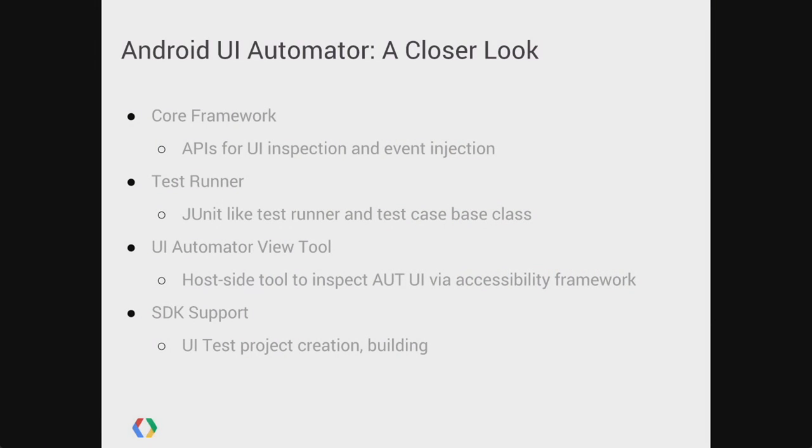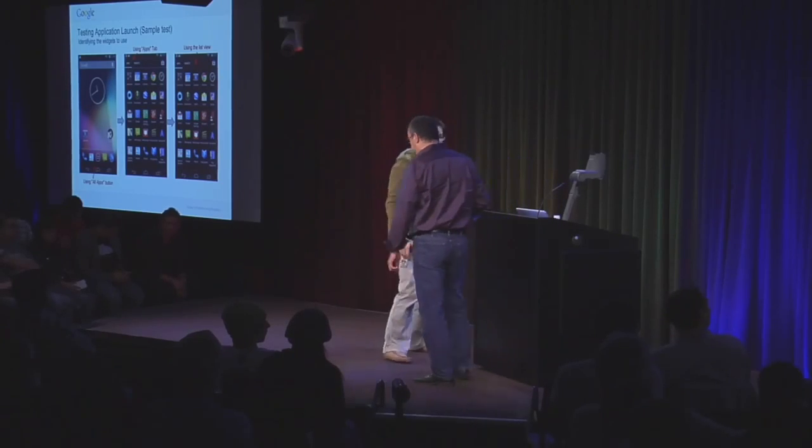As a package presented to the end user, we provide: first, the core framework as outlined; second, a test runner that works in a JUnit3 style; third, a UI Automator Viewer tool — a host-side tool to let you inspect the application under test's UI so you can decide which widgets to look up and test against; and fourth, SDK support with an Ant-based build and scripts to create an empty UI test project, build the test into a JAR file, push it to the device, and run it with the test runner.